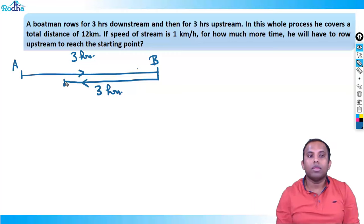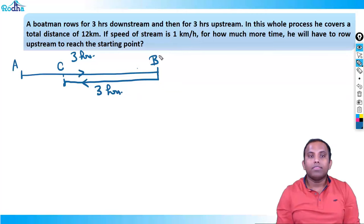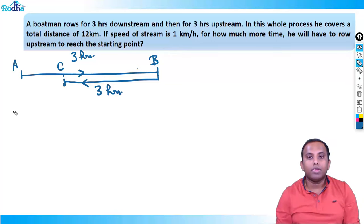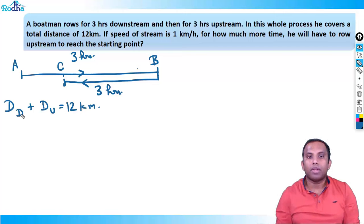That means the boat will not completely reach point A in 3 hours. Let's say the boat reaches a point C in 3 hours. He has covered a total distance of 12 km. So I can write: distance downstream plus distance upstream equals 12 km. Distance is speed into time.